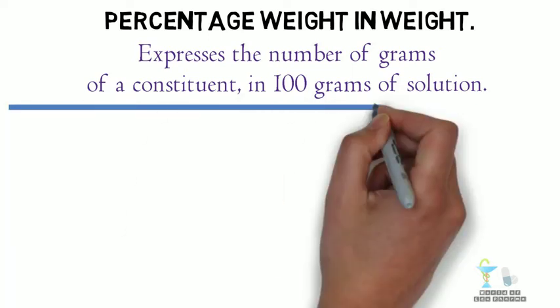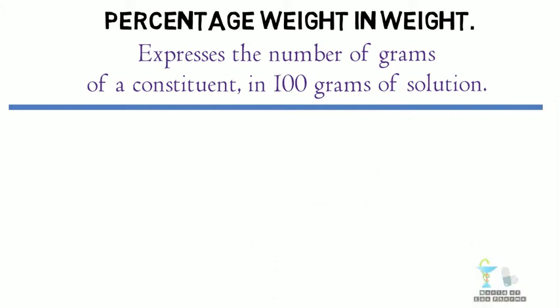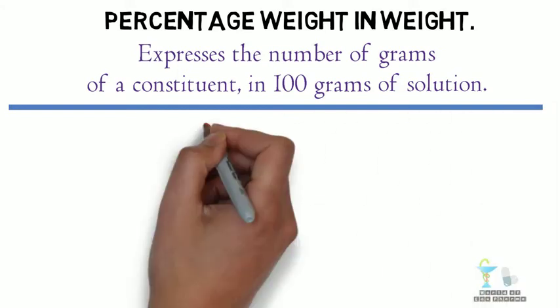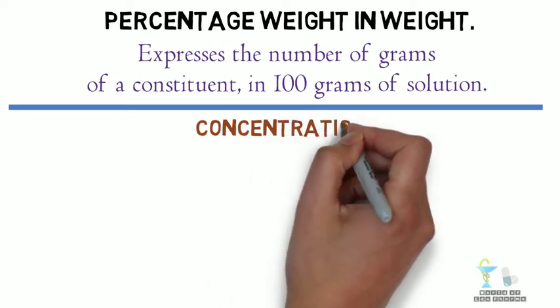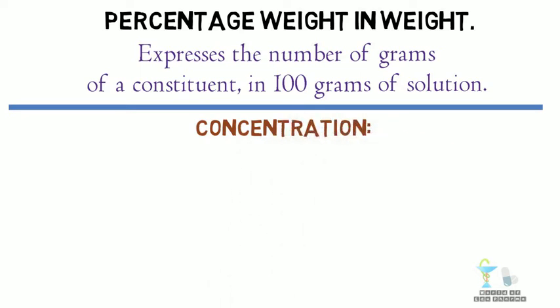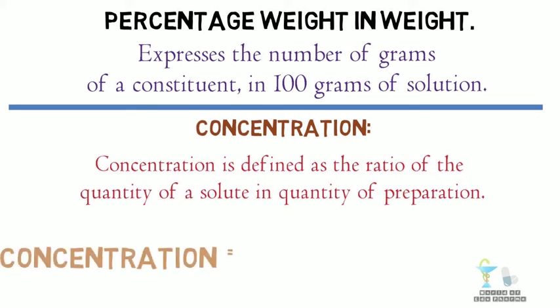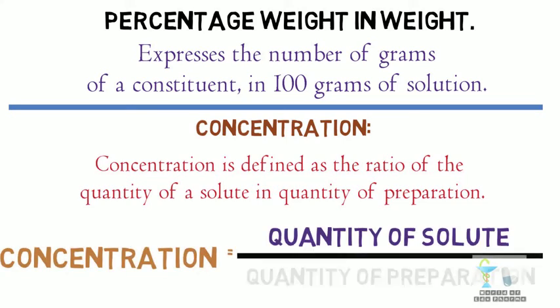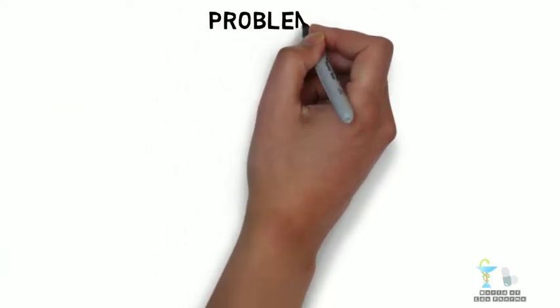Now if we look at some problems we can understand this better. Before going into the problems, let us see what is concentration. Concentration is defined as the ratio of the quantity of a solute divided by the quantity of preparation. Now let us see an example problem for weight by weight.